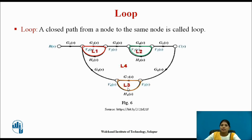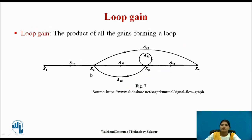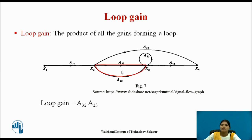Then we have l2, l3, and l4. Now we calculate the loop gain, which is the product of all the gains forming a loop. First identify the loop, then multiply all the gains of that loop. For that loop, the loop gain equals a23 multiplied by a32.